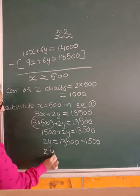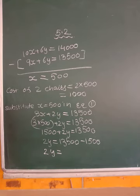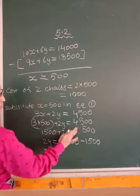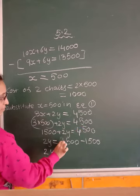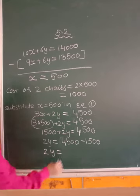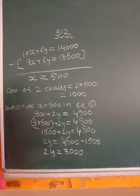So 2y comes out to be 3,000. 2y is equal to 3,000 and now we have y is equal to... or we don't have to find y. We want value of 2y only. 2 chairs and 2 tables.